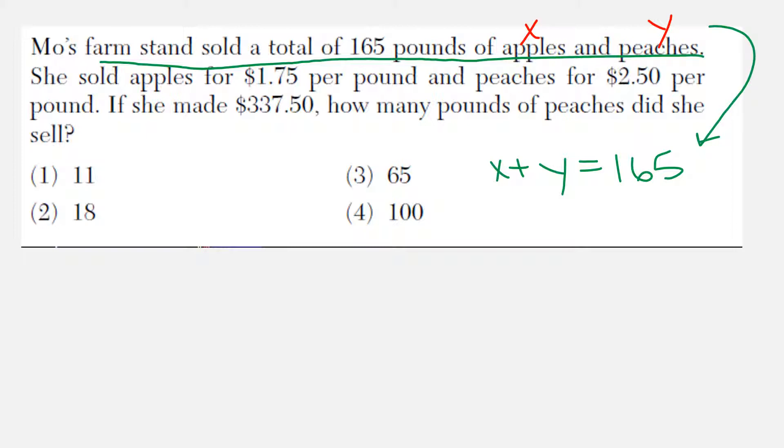My next equation deals with money. She sold apples for $1.75 per pound, but we don't know how many pounds, so it's 1.75X. Peaches are $2.50, so 2.50Y. Together we sold them for $337.50. Those are our two equations: one for total pounds and one for total cost. You'll always have those two types of equations here.